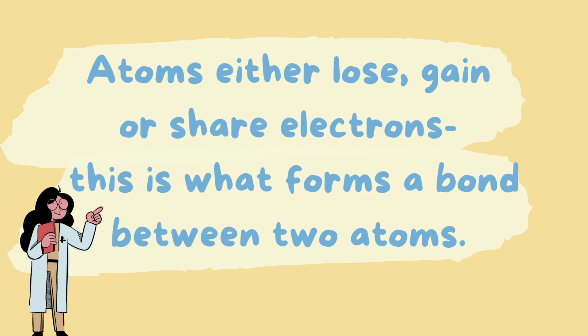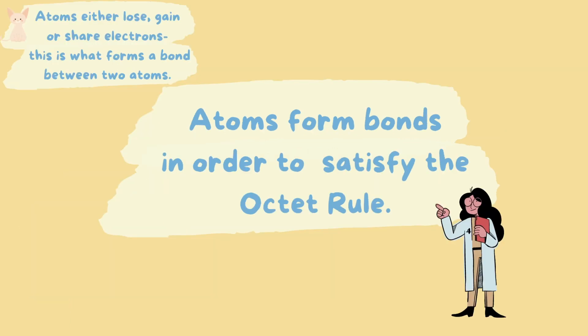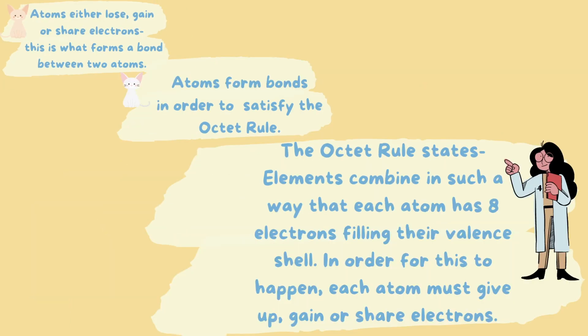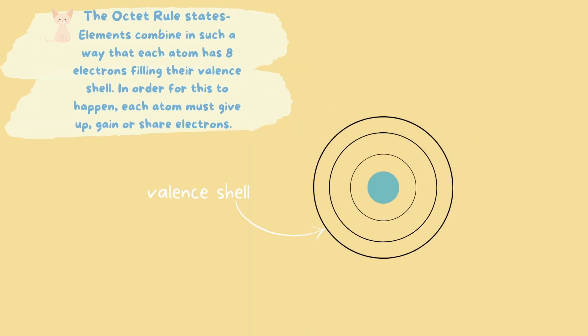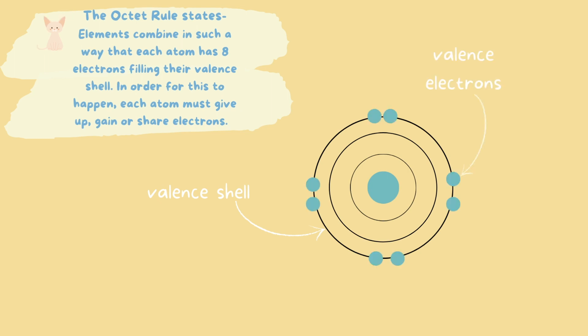Atoms either lose, gain, or share electrons — this is what forms a bond between two atoms. Atoms form bonds in order to satisfy the octet rule. The octet rule states that elements combine in such a way that each atom has eight electrons filling their valence shell. In order for this to happen, each atom must give up, gain, or share electrons. The valence shell refers to the outermost shell on an atom, and the valence electrons are all of the electrons on that valence shell.